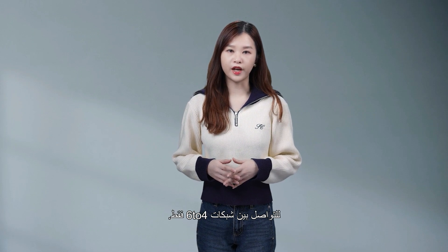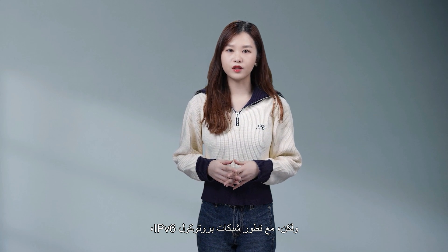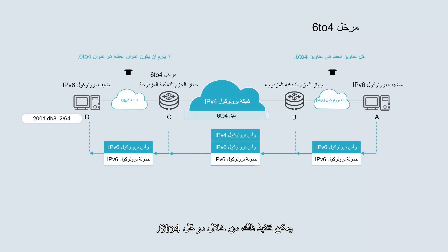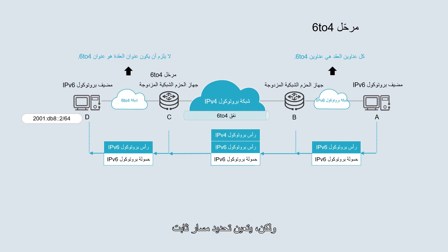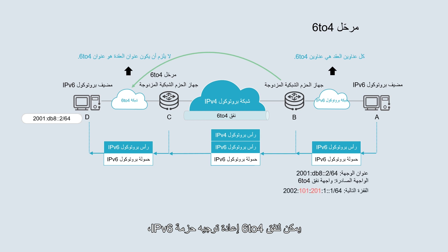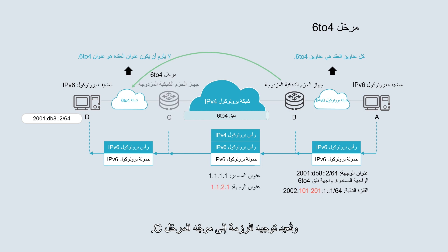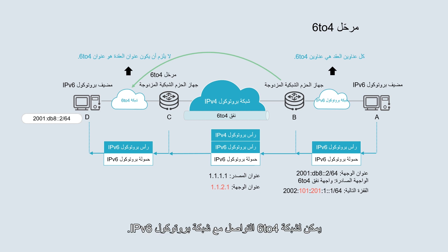A 6to4 tunnel can be used only for communication between 6to4 networks. However, with the development of IPv6 networks, common IPv6 networks need to communicate with 6to4 networks through IPv4 networks. This can be implemented through 6to4 relay. The method of creating a tunnel between a 6to4 relay router and a common 6to4 router is similar to that of creating a tunnel between common 6to4 routers. However, a static route needs to be specified from the common 6to4 router to the IPv6 network. The 6to4 tunnel can forward an IPv6 packet whose next-hop address, instead of the destination address, is a 6to4 address. After obtaining the IPv4 address in the next-hop address, node B encapsulates the address into the destination address field of the IPv4 packet and forwards the packet to relay router C, which then forwards the packet to the IPv6 network. In this way, the 6to4 network can communicate with the IPv6 network.